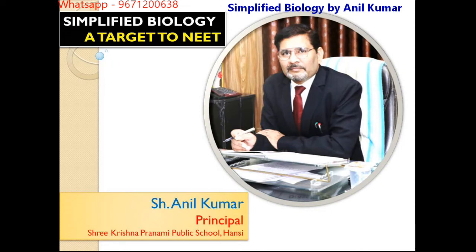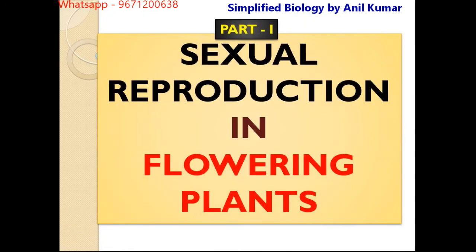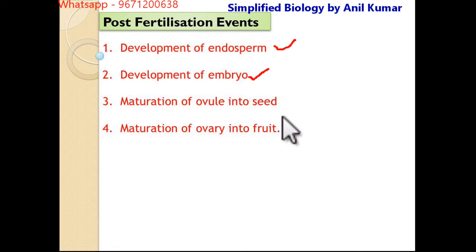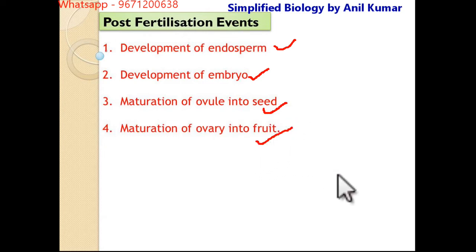Welcome students to the last session of the chapter Sexual Reproduction in the Flowering Plant. Today we are going to start the post-fertilization events. It consists of the development of the endosperm, development of the embryo, maturation of the ovule into the seed, and maturation of the ovary into the fruit.